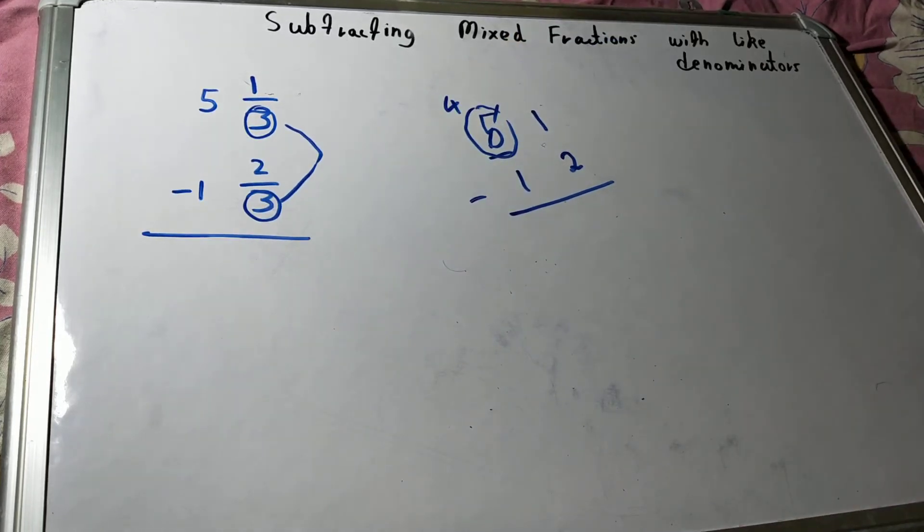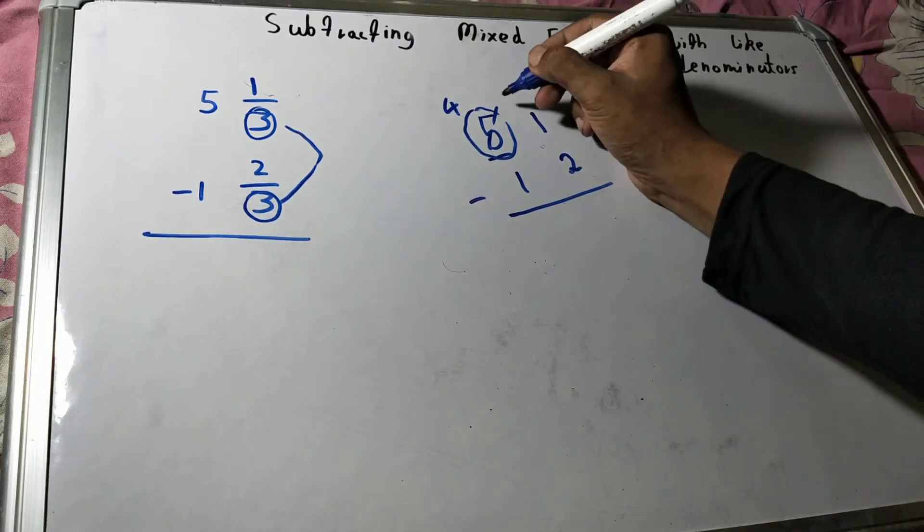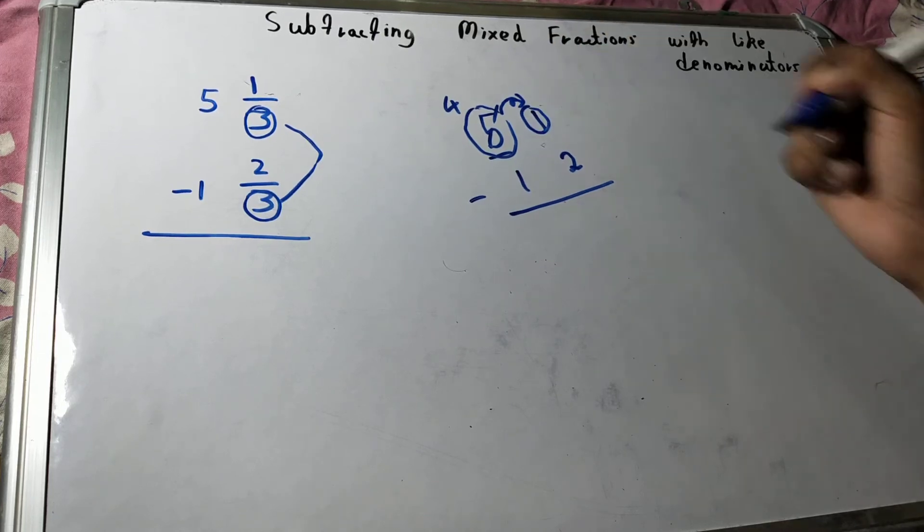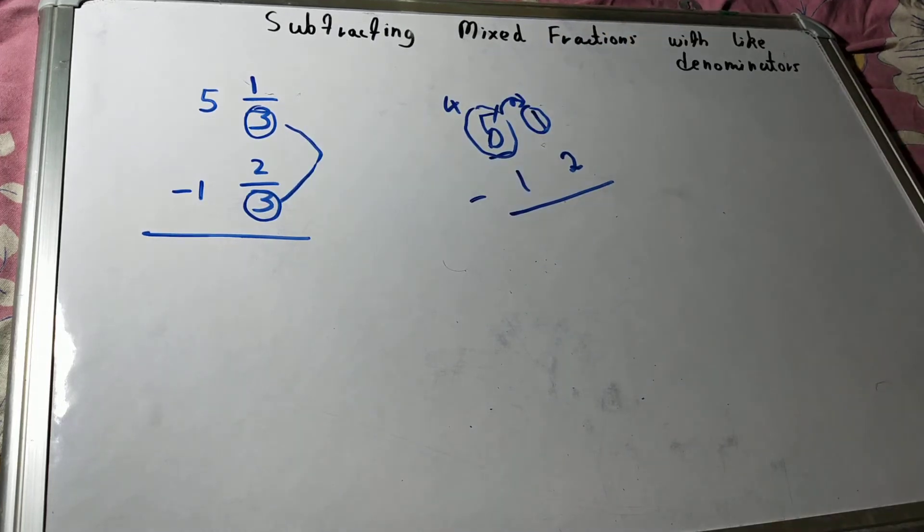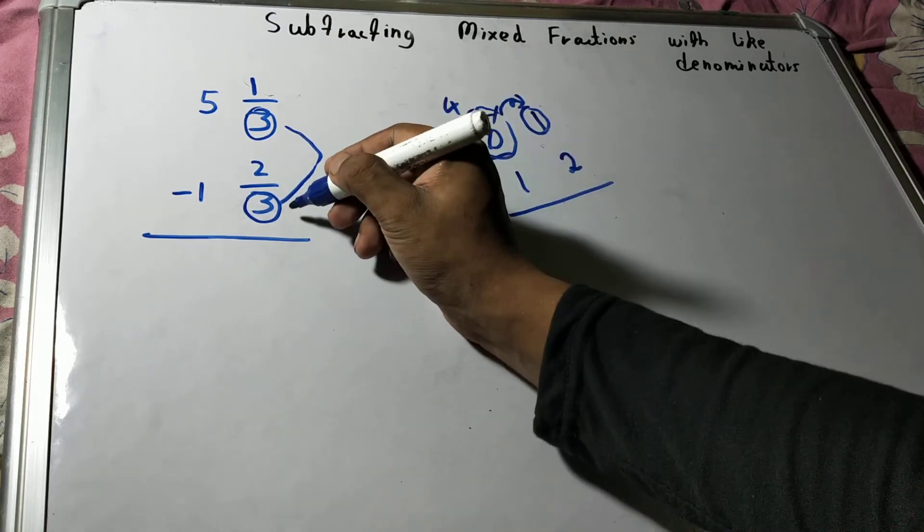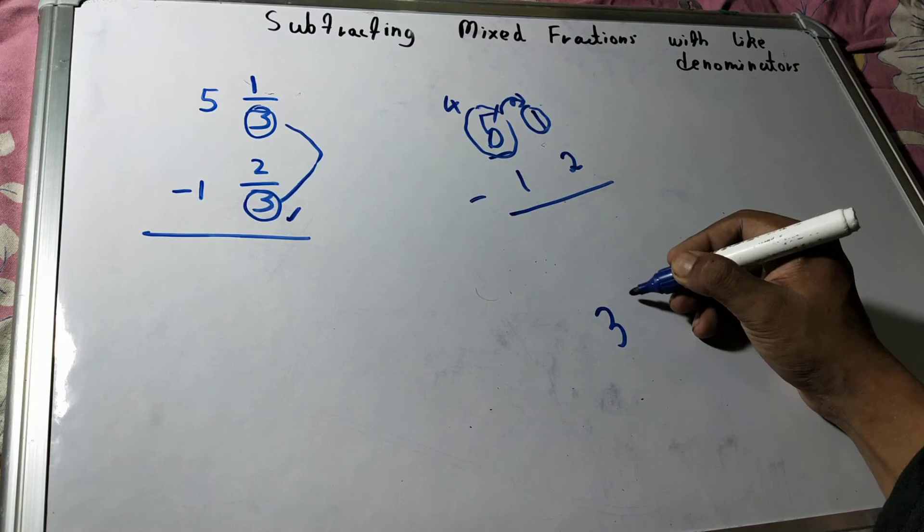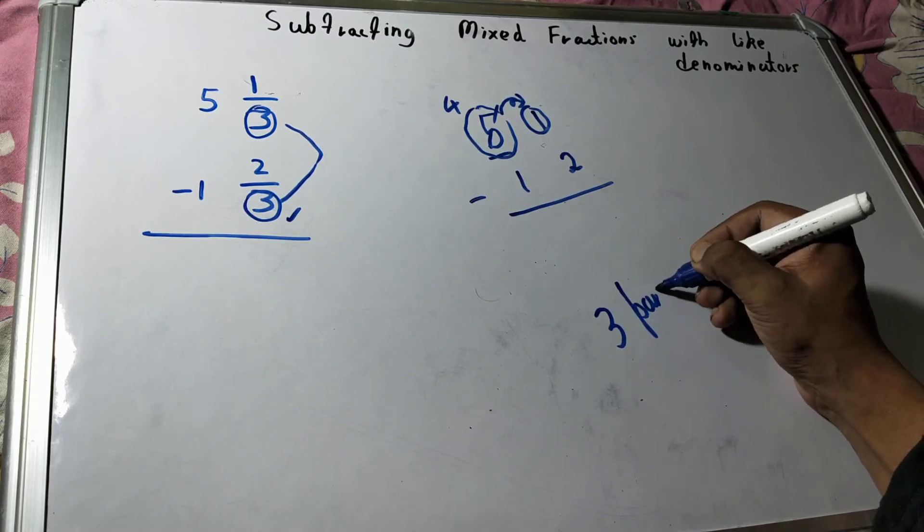Now there is one thing that you need to memorize or you need to remember. When you bring a borrow over here, this number will not become 11 just like your normal borrowing. Why? Because if you see this, the denominator, it says 3 parts. The fraction has 3 parts, a total of 3 parts.